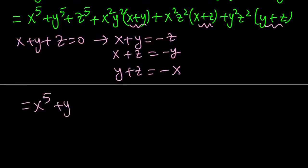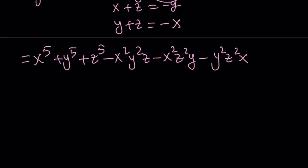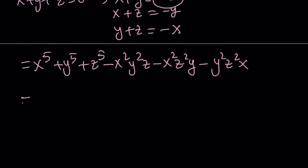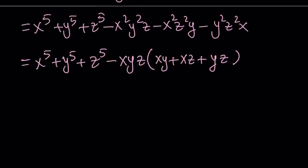We get x to the fifth plus y to the fifth plus z to the fifth. And then x plus y is replaced with negative z, giving us: minus x squared y squared z, minus x squared z squared y, minus y squared z squared x. This is much better. Now I would like to factor the negative terms — pull out a negative xyz — and then you get xy plus xz plus yz inside the parentheses, all positive because we took out the negative.